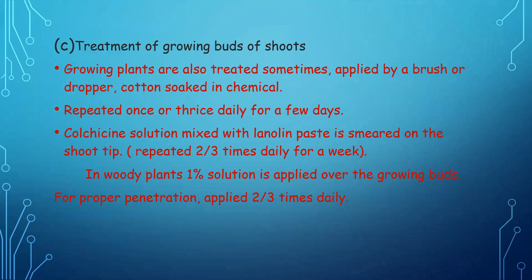The next method is treatment of growing buds of shoots. Growing plants are also treated sometimes — colchicine can be applied by a brush, dropper, or cotton soaked in the chemical, and is repeated once or twice daily for a few days. Colchicine solution mixed with lanolin paste is smeared on the shoot and repeated 2 to 3 times daily for a week. In woody plants, a one-percent solution is applied over growing buds and repeated 2 to 3 times daily for proper penetration.